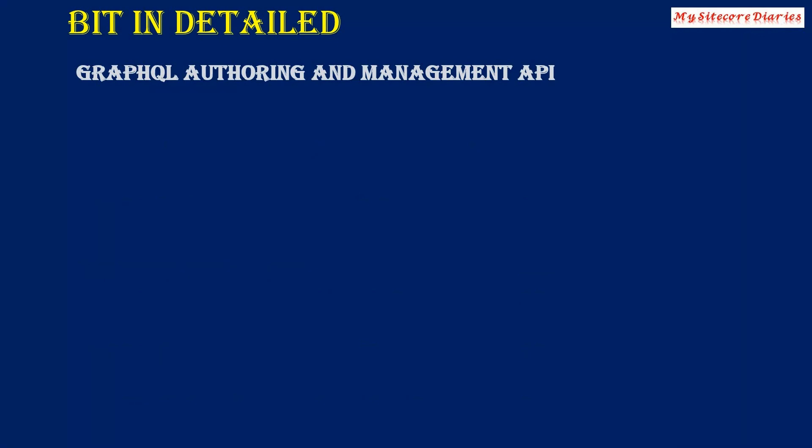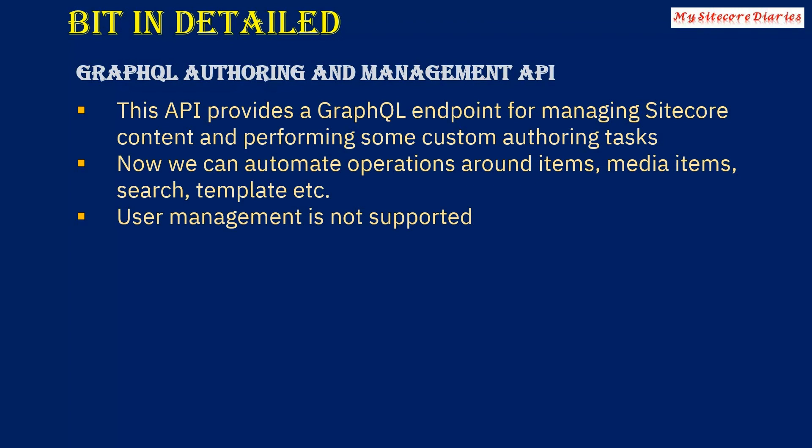First is the GraphQL authoring and management API. Sitecore has provided GraphQL endpoint APIs for managing Sitecore content and performing custom authoring tasks. Because of these APIs, you can now automate operations around items, media items, search templates, etc. Note that there is no API support provided for user management.